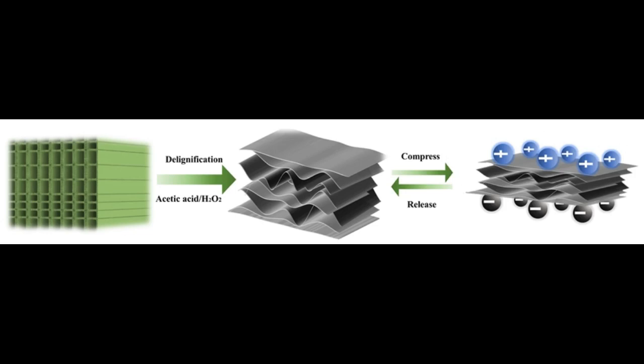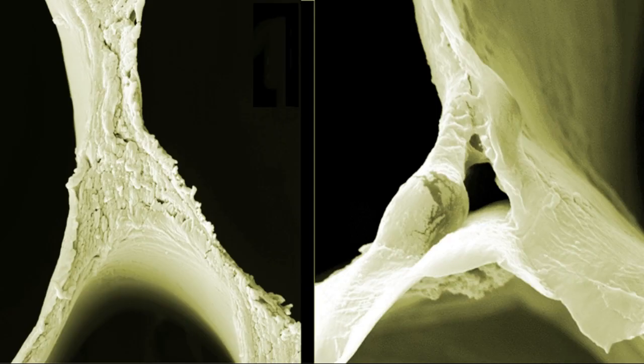The resulting white wood sponge consists of superimposed thin layers of cellulose that can easily be squeezed together and then expand back into their original form. Wood has become elastic.